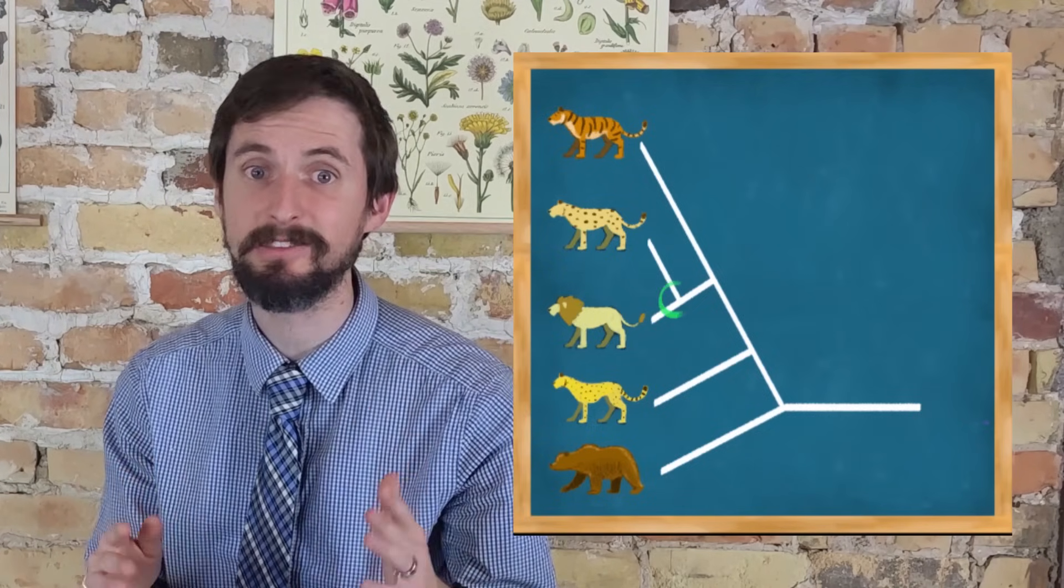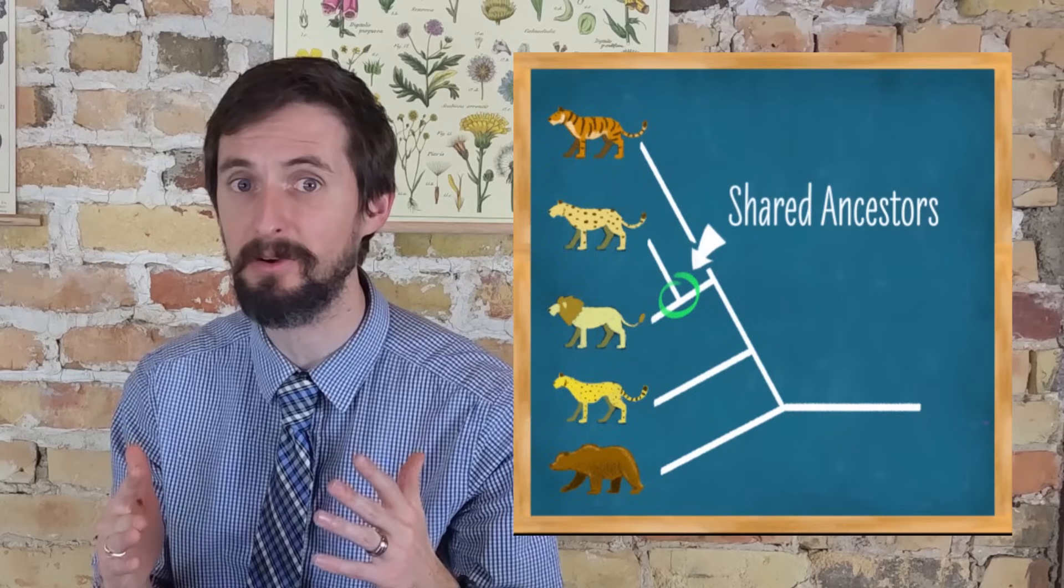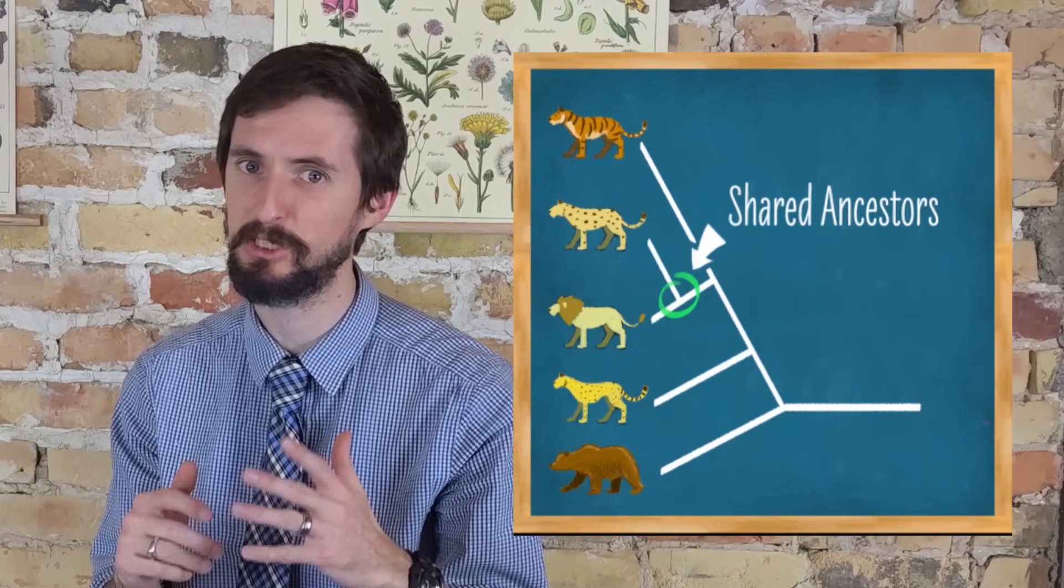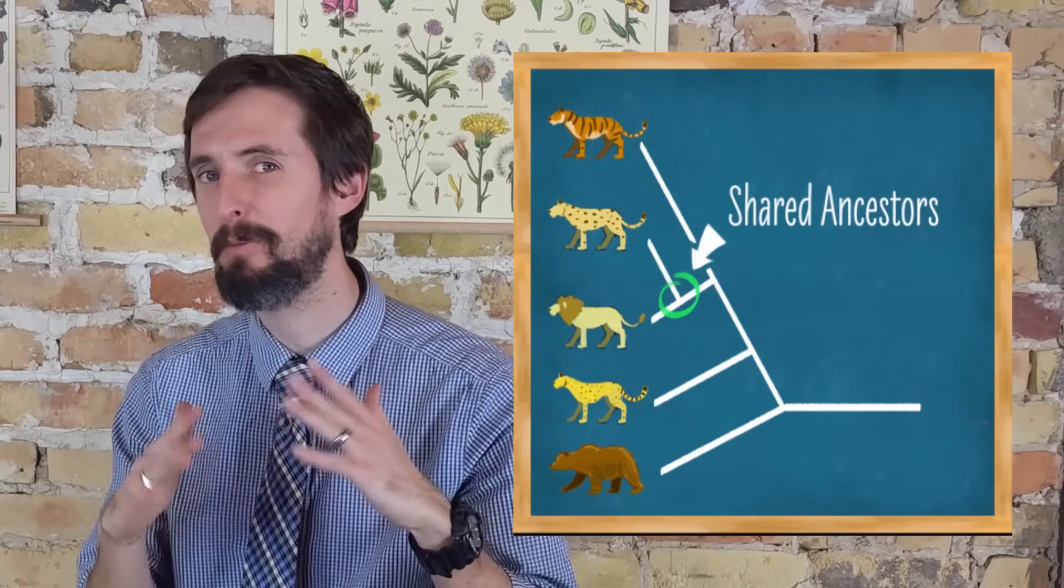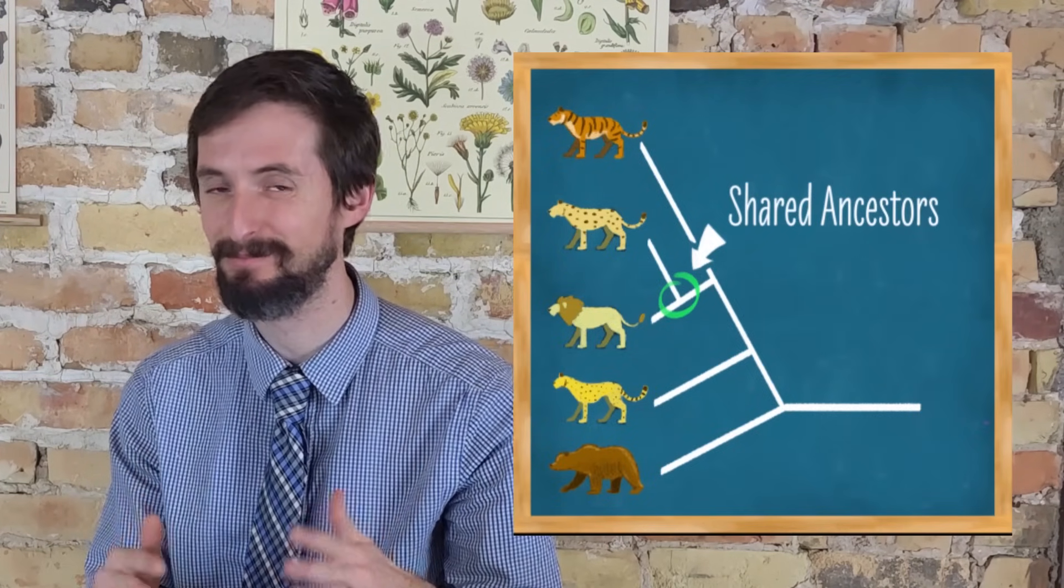Leopards and lions are more closely related to one another than they are to tigers, because they share more recent common ancestors with one another than they do with tigers. But they are both equally related to tigers. And now you know. But to make sure that you understand how to interpret phylogenetic trees, I have a couple of questions for you to answer down in the comments. Please feel free to ask questions and to help one another with these questions as well.